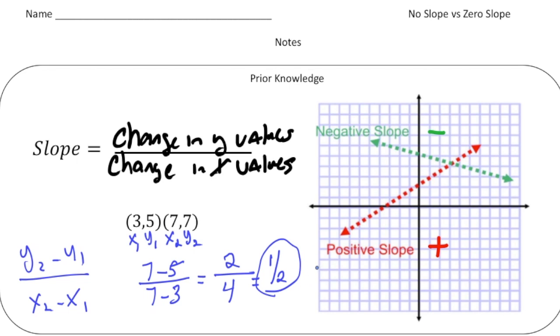So hopefully all of this looks pretty familiar to you. So now let's focus on two new types of slope. If you turn the page.